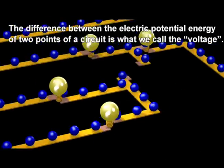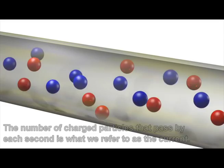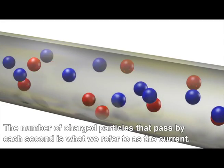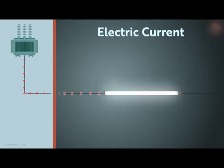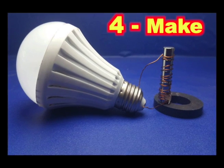Electricity has push, called voltage, and flow, called current. Four: Make.